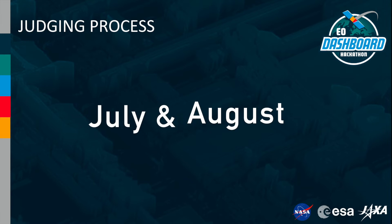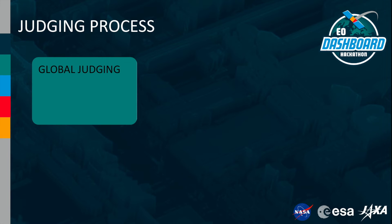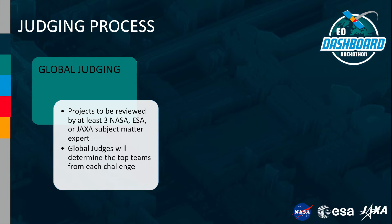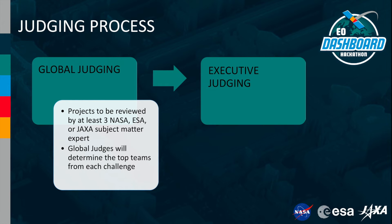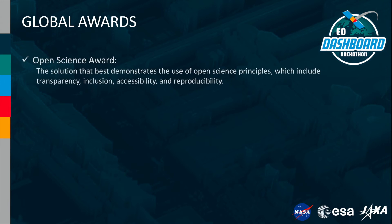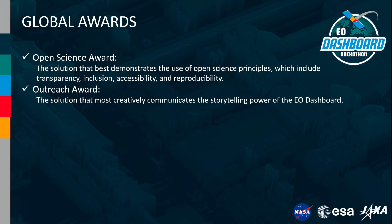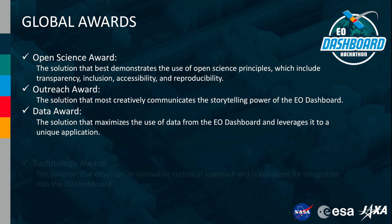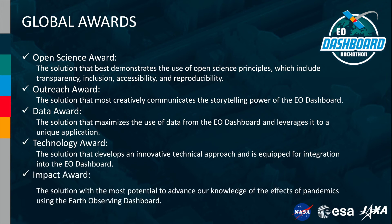Judging for the hackathon will take place in two stages throughout July and August of 2021. The first is global judging — all projects that meet the basic requirements will advance to global judging, where they will be reviewed by at least three NASA, ESA, or JAXA subject matter experts, otherwise known as global judges. These global judges will determine the top teams from each challenge. These top teams, also known as global finalists, will then be reviewed by an executive committee from NASA, ESA, and JAXA, also known as executive judges. These executive judges will nominate teams for one of five awards: the Open Science Award, the Outreach Award, the Data Award, the Technology Award, and the Impact Award.